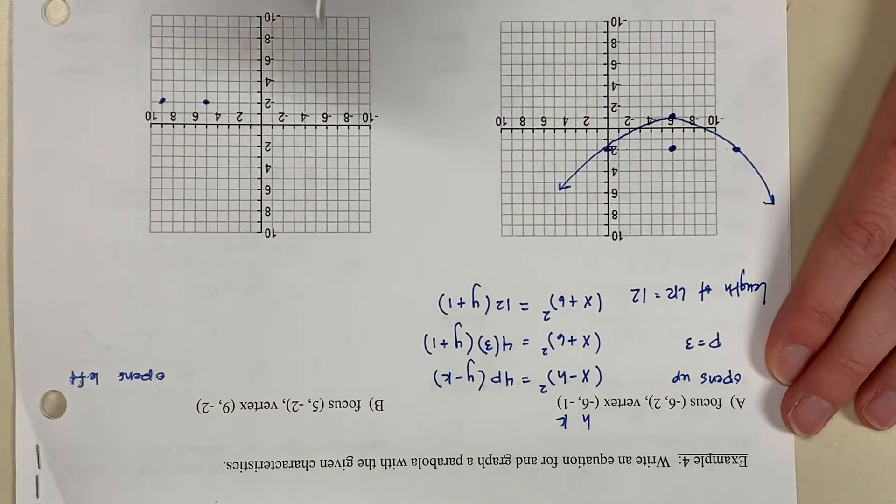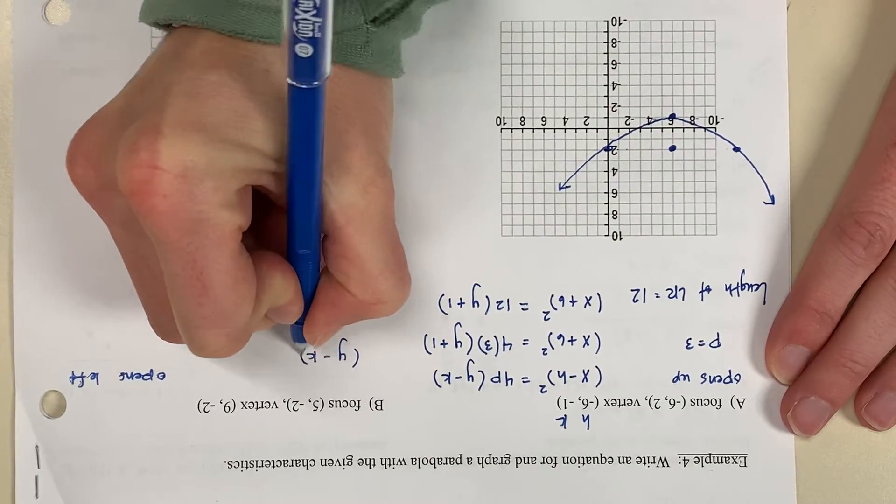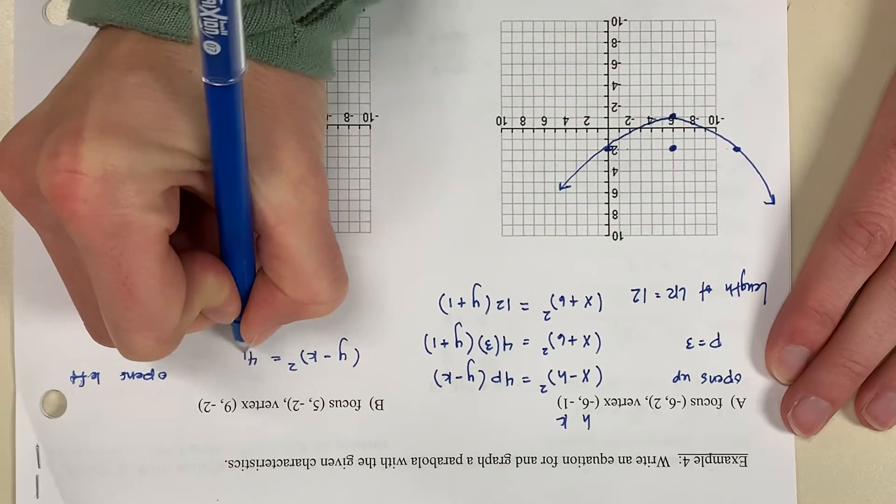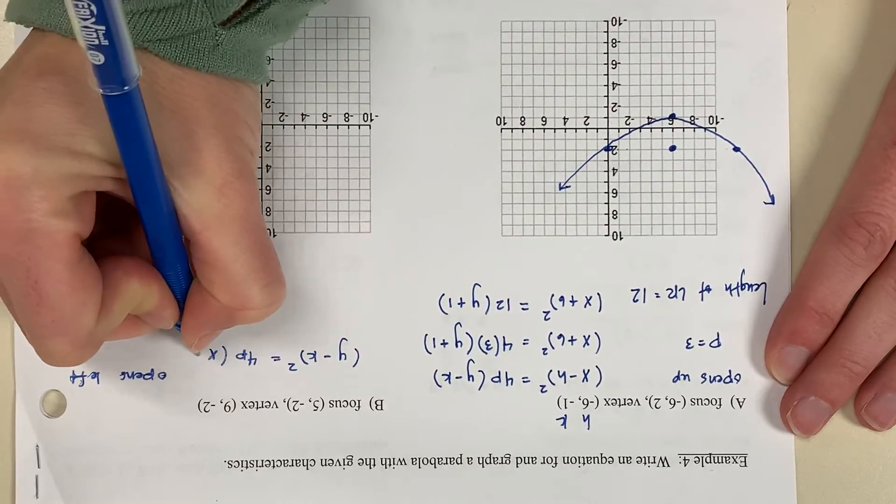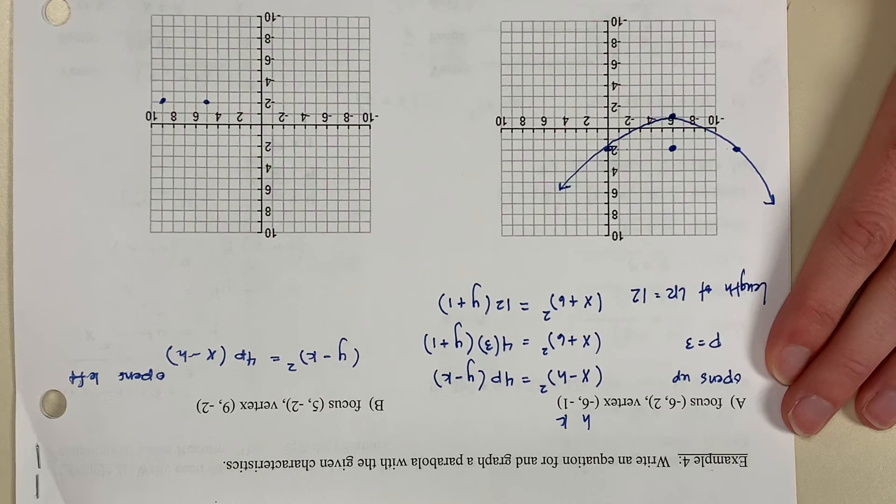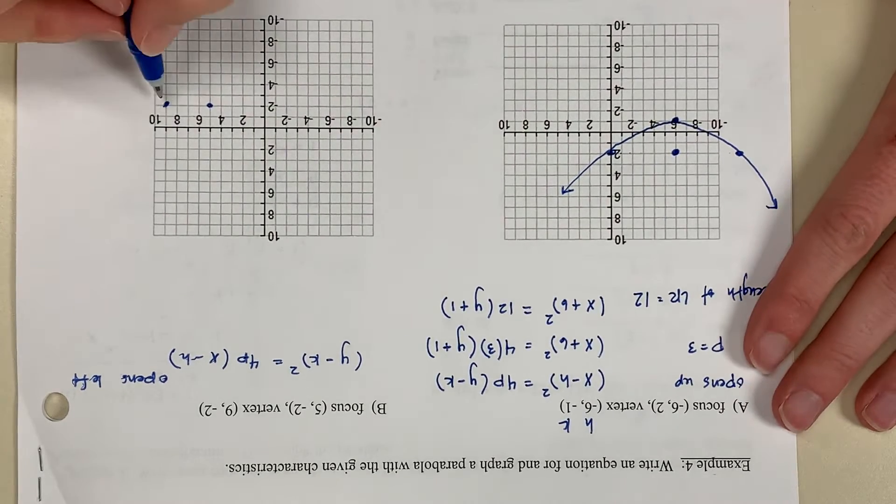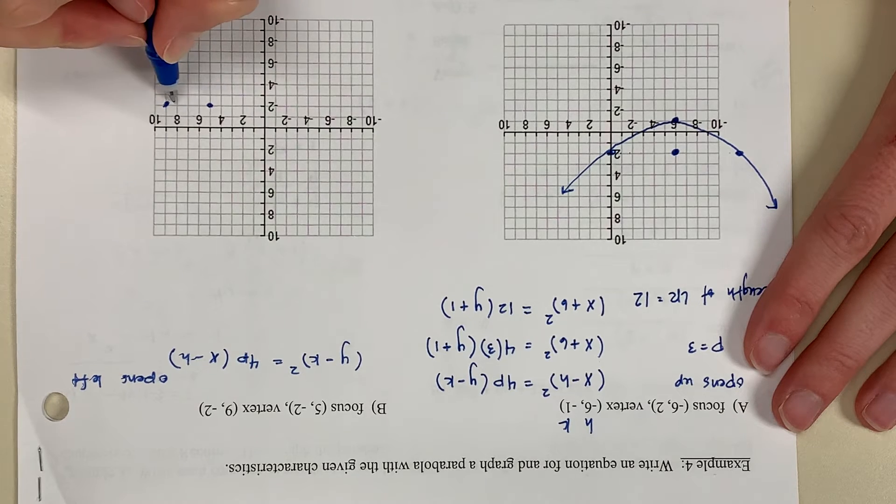And if it opens left, standard form is y minus k squared equal to 4p times the quantity x minus h. Now p is the distance from the center to the vertex.